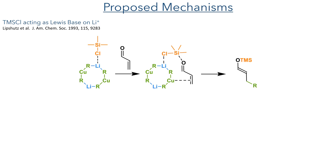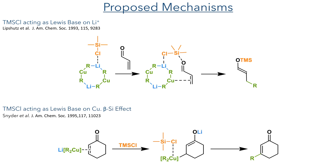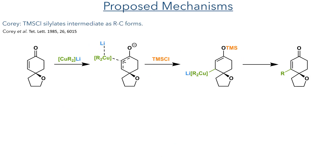Using lithium NMR, Lipschitz has shown that there is an interaction between the TMS chloride and the lithium cation, and he suggests that this interaction modulates the reactivity of the organocopper cluster. Using DFT calculations, Snyder has also proposed a mechanism where the TMS chloride acts as a Lewis base, but suggests that the chloride coordinates to the copper and stabilises the intermediate through a beta-silicon effect. Corey, on the other hand, favours a mechanism where the TMS chloride acts as a silylating reagent, silylating the oxygen after the initial bond between the pi electrons of the enone system and the d orbital of the copper reagent has been formed.